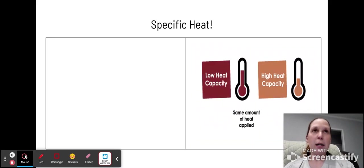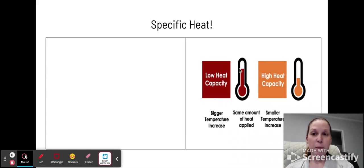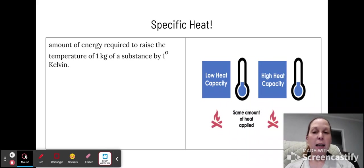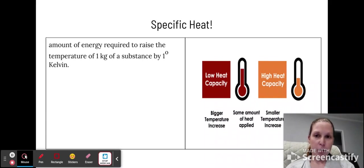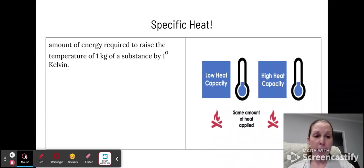Now that we've talked a little bit about heat, we can get even more in depth with this topic and look at what's called specific heat. Specific heat is defined as the amount of energy required to raise the temperature of one kilogram of a substance by one Kelvin. There should not be a degree symbol there. By one Kelvin.